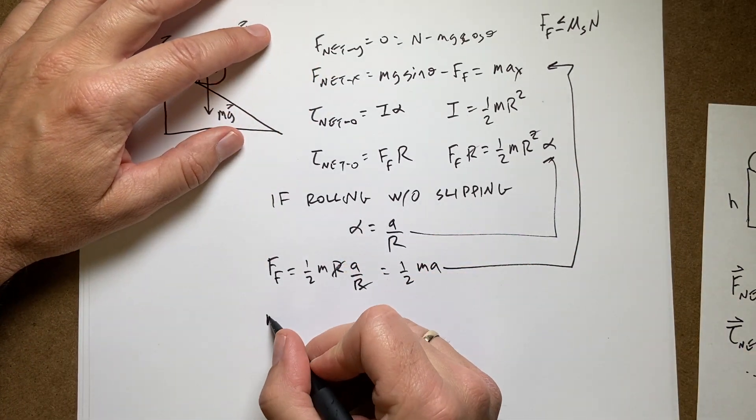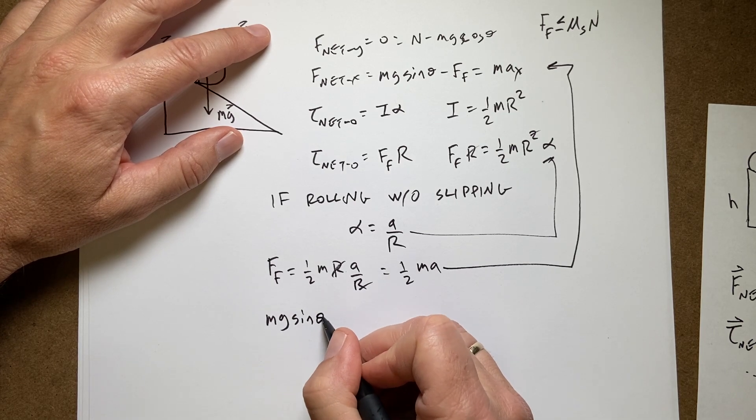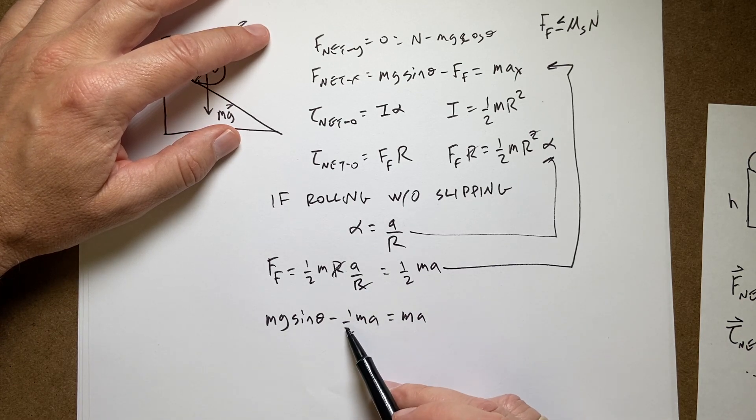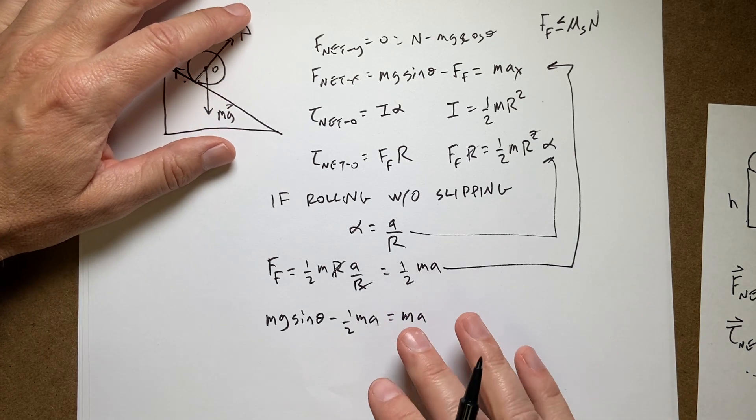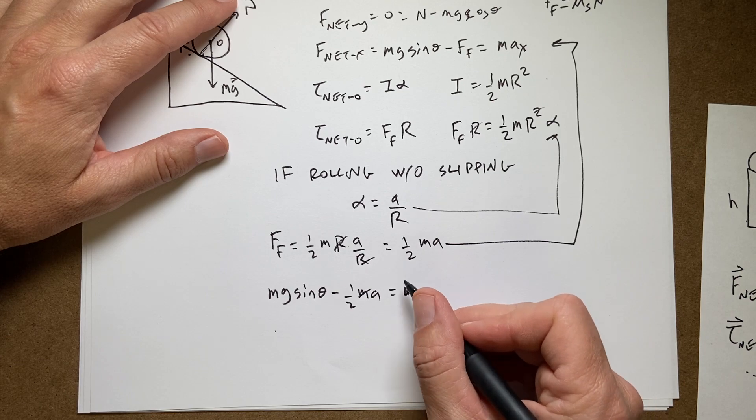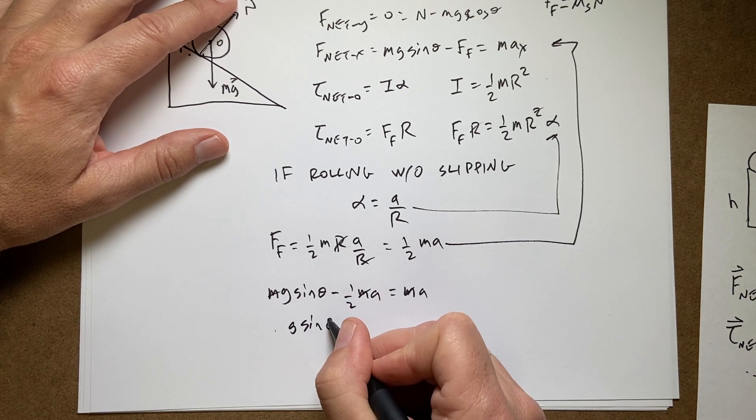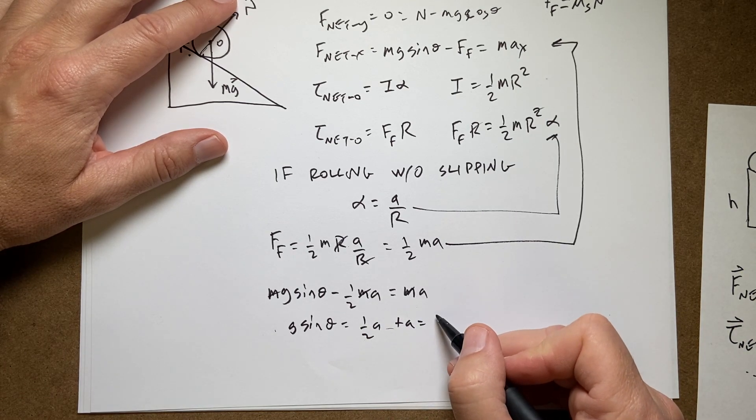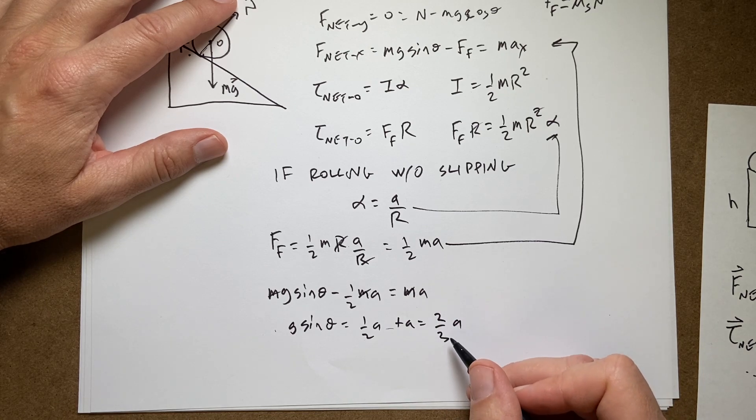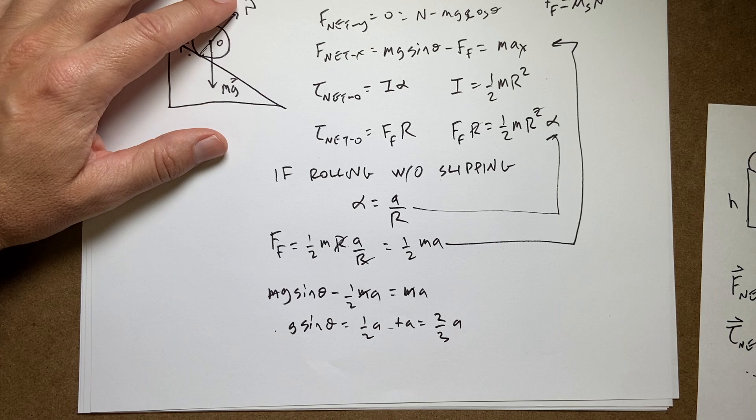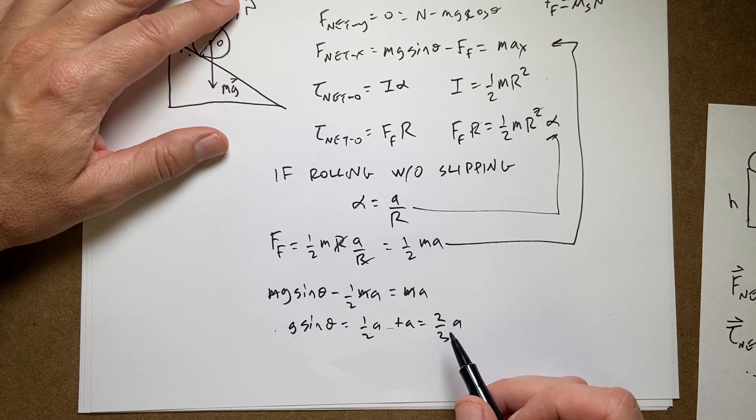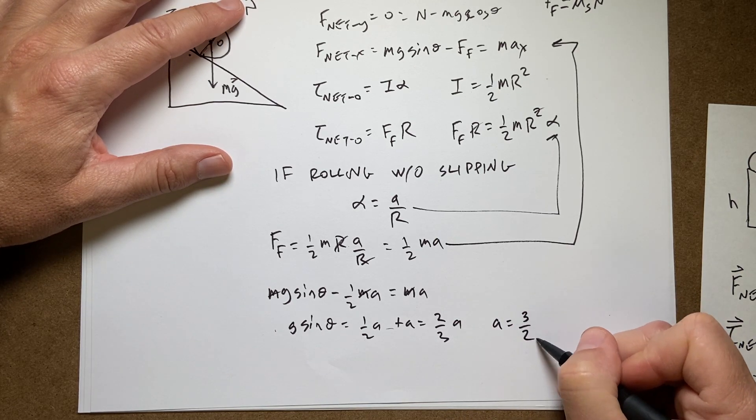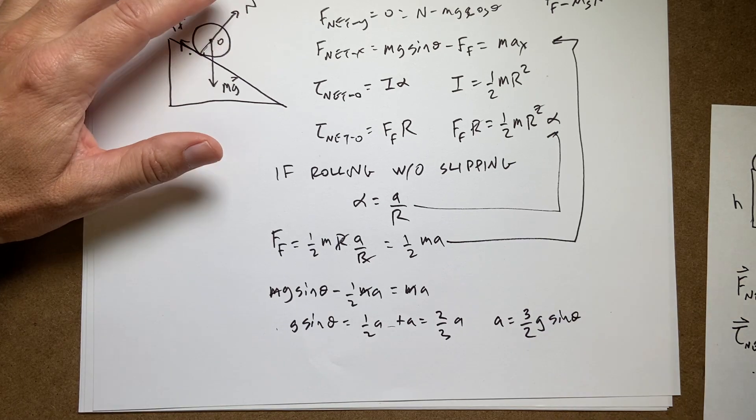So now I get M G sine theta minus one half M A equals M A. So if I add that to both sides, and the masses all cancelled, I get G sine theta is one half A plus A, which is going to be, this is two thirds A. Did I get that before? Yeah, I did. Now if I multiply both sides by three halves, I get A equals three halves G sine theta. Is that what I got?